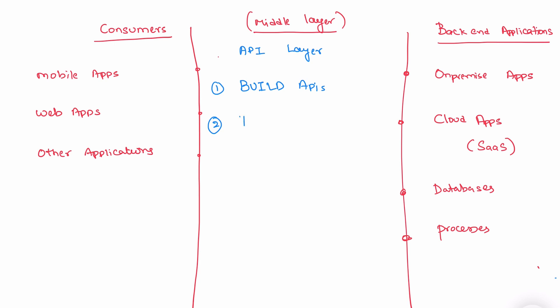Once the build is done, you test it. You use any API test applications like Postman or SOAP UI. You test the API to make sure it is actually working according to the specification.